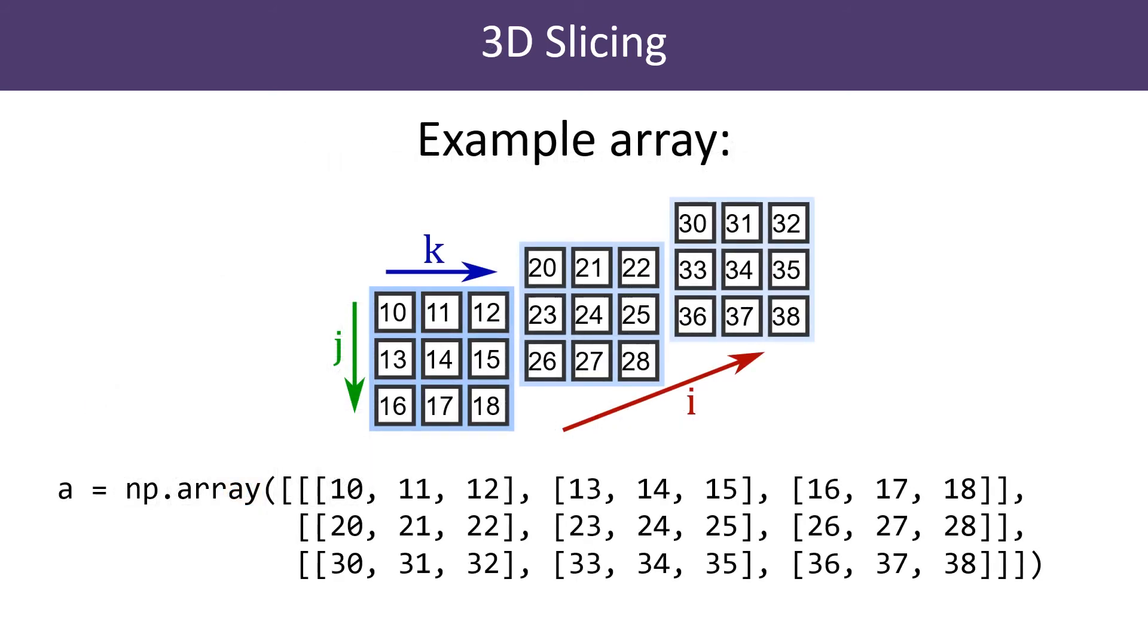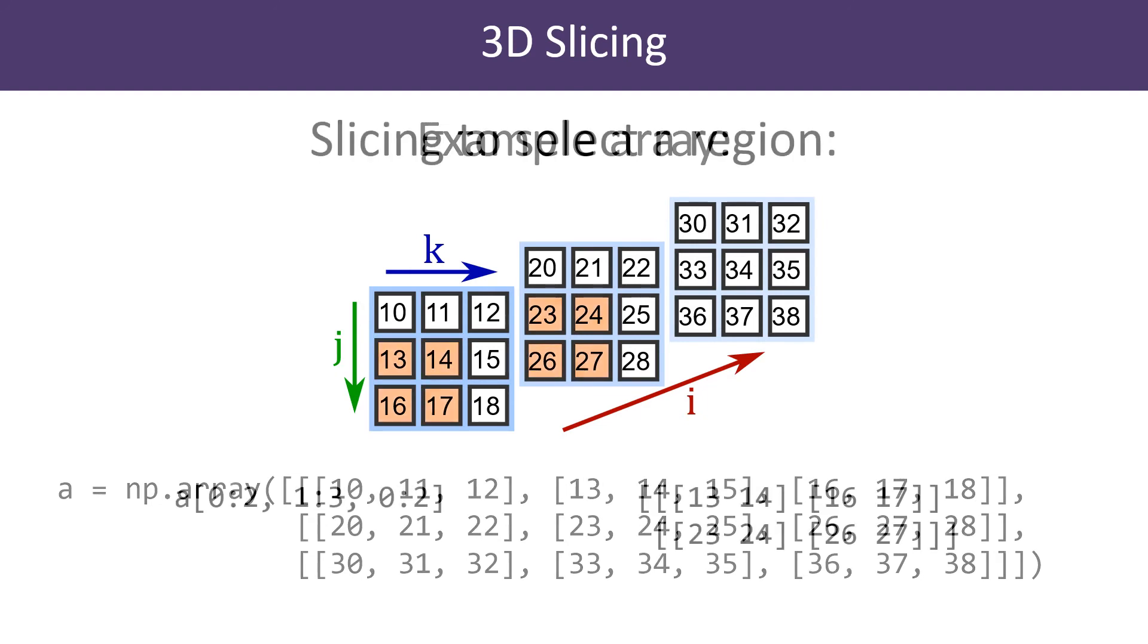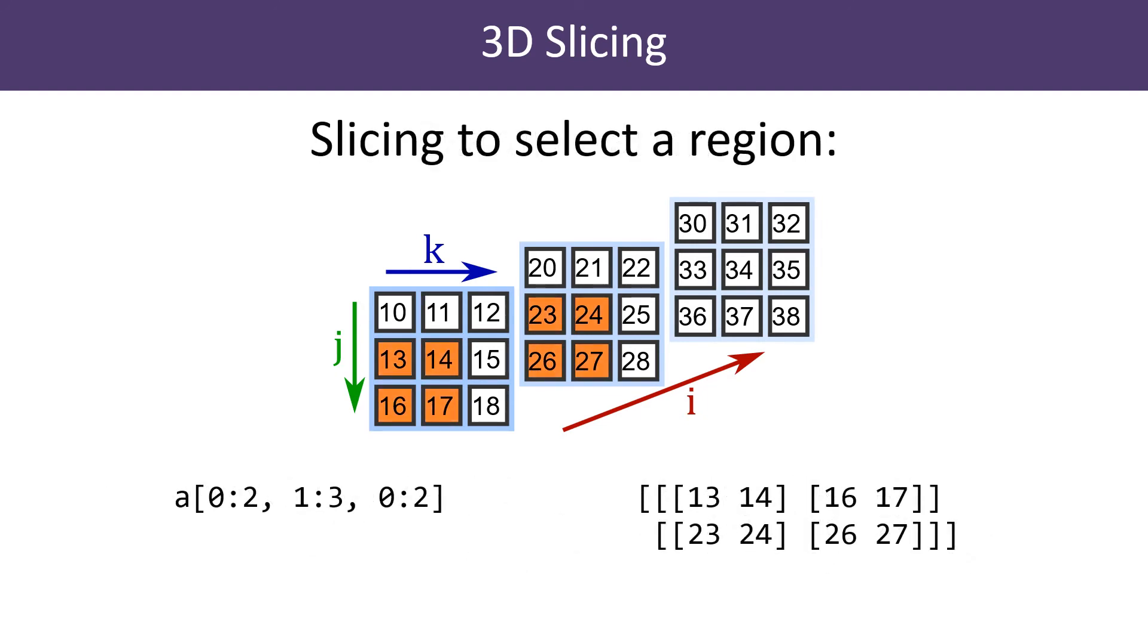Now let's look at the case for the 3D array. This is just an extension of the 2D case. Here we've used three slices. The first dimension has a slice [0:2], which selects the first and second sheet.